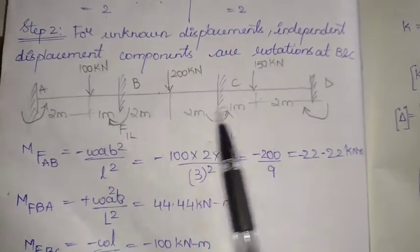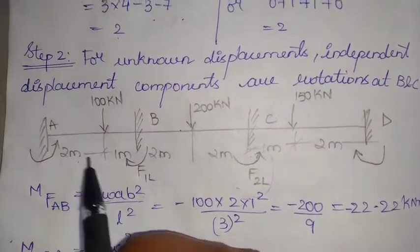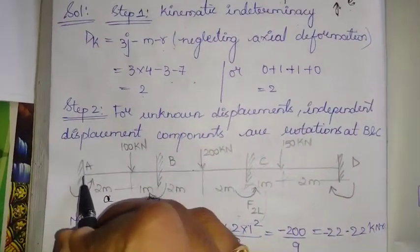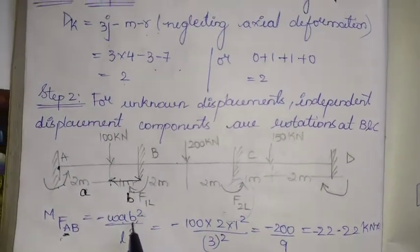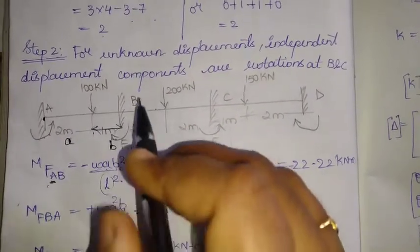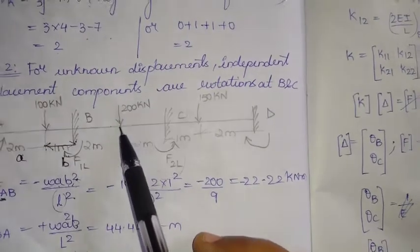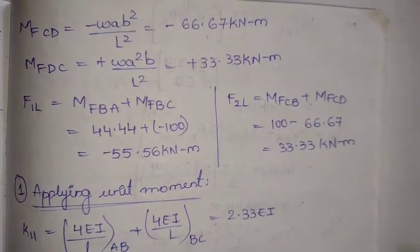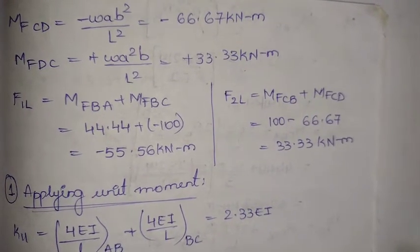Next we calculate the fixed end moments, assuming the whole beam to be fixed. For span AB with an eccentric point load: MfAB = W·a·b² / L² and MfBA = W·b·a² / L², where a is the near-end distance and b is the far-end distance. For span BC with a central point load: MfBC = MfCB = WL/8. For span CD with an eccentric point load, the same formula is applied to get MfCD and MfDC.